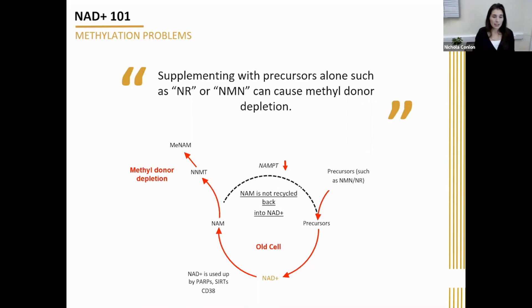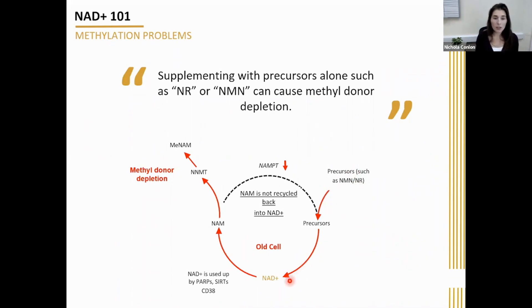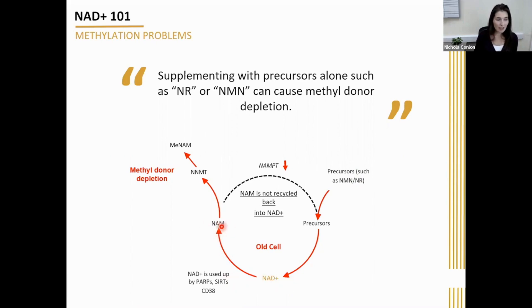If you just use a supplement such as NR or NMN — a precursor-based supplement — the precursor goes into the cell and does get converted into NAD. This is why you see companies that produce these molecules show around a 60% increase in NAD with these supplements. You do get an increase in NAD, but this NAD is then used up and broken down, and as soon as it's broken down, it's converted back into nicotinamide.